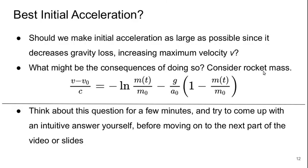So that gives rise to an interesting question. What should we pick for that initial acceleration? Should we make the initial acceleration as large as possible since it decreases gravity loss and therefore increases the maximum velocity v? What might be the consequences of doing that? Let's think about the impact on the rocket mass.